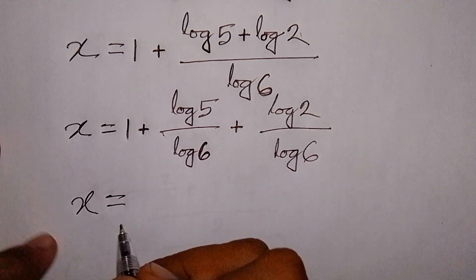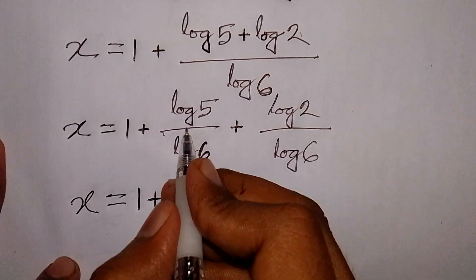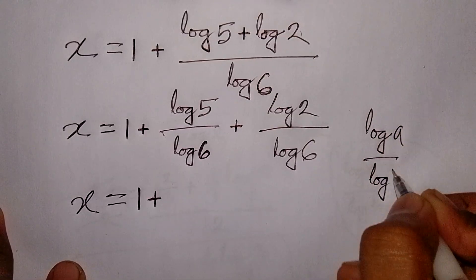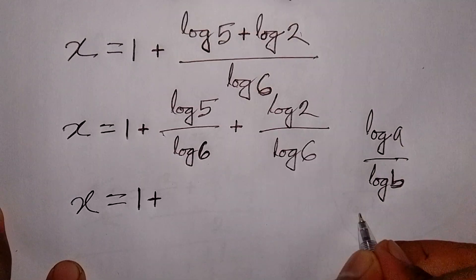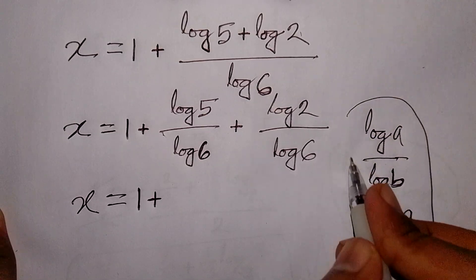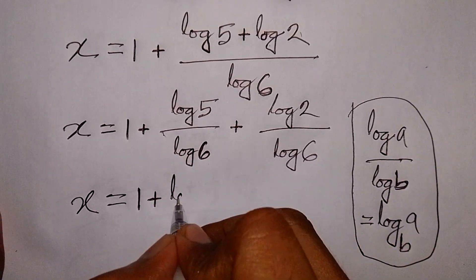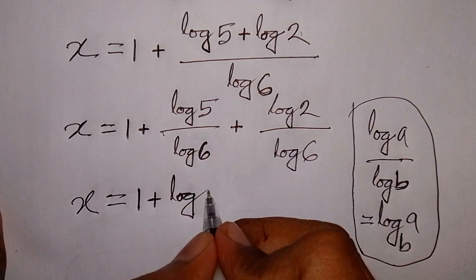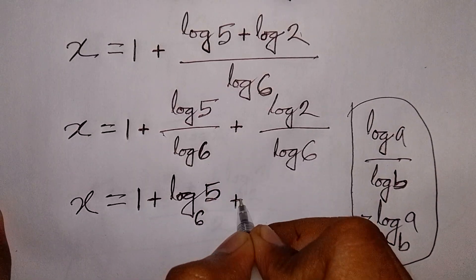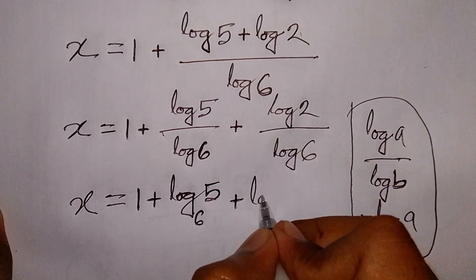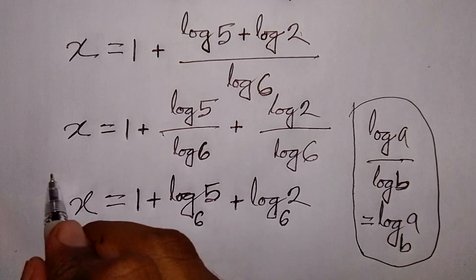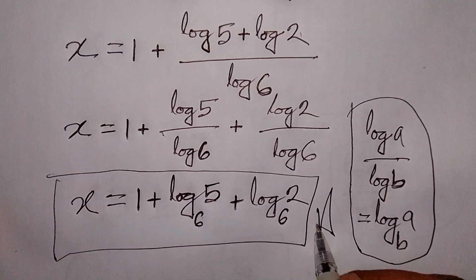So x is equal to 1 plus log 5 over log 6, plus log 2 over log 6. Here we apply the change of base formula: log a over log b is equal to log base b of a. So it will be 1 plus log base 6 of 5 plus log base 6 of 2. This is the value of x — our final answer.